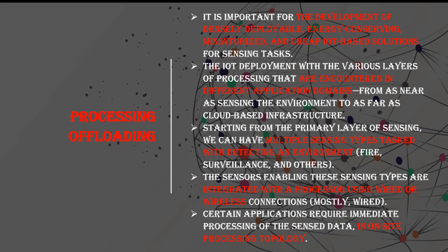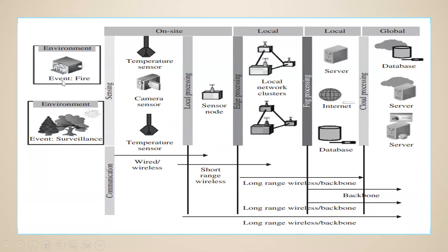Certain applications actually require immediate processing, like on-site processing topologies. Such applications will expect a highly responsive output. For example, consider fire detection and surveillance — fire is sensed by a temperature sensor, and surveillance is handled by a camera sensor. After sensing, it goes to the sensor node and then to a cluster of nodes, which then contacts the server.